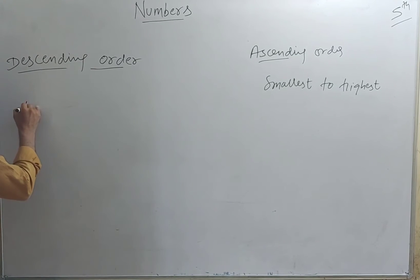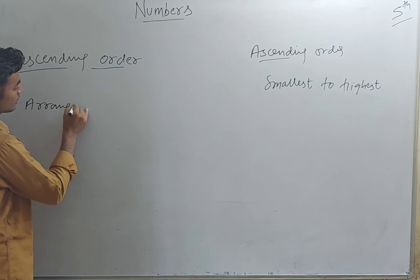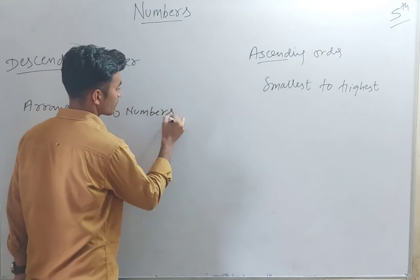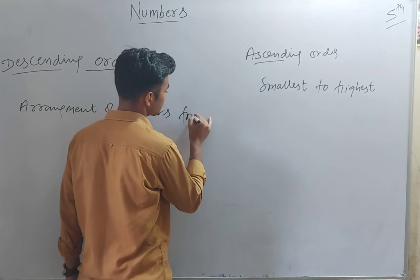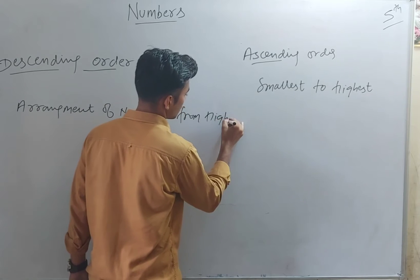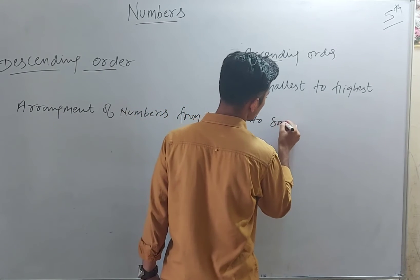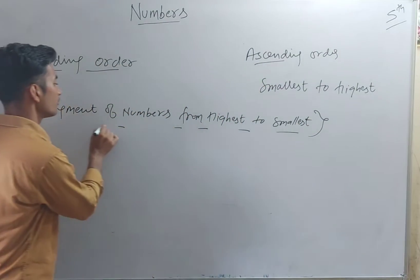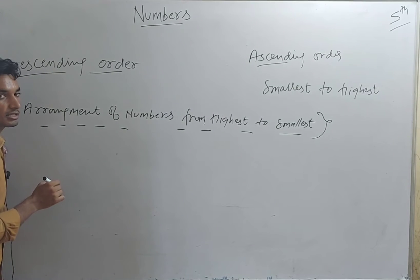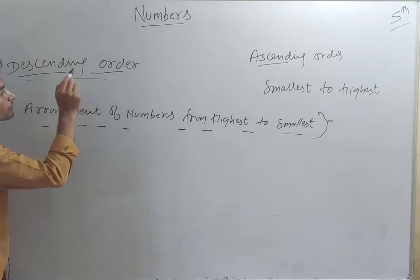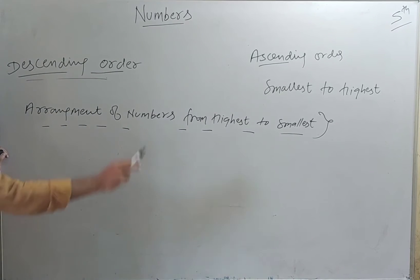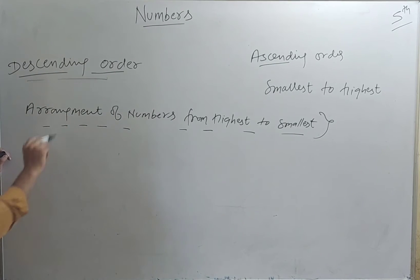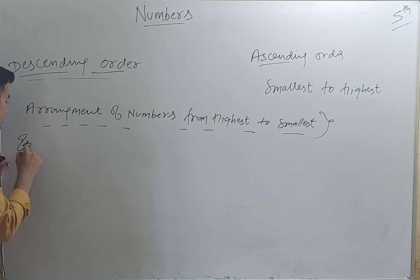What is the descending order? Descending order is the arrangement of numbers from highest to smallest. In Hindi we call it 'avrohi kram'. Ascending order and descending order are both arrangements of numbers — ascending goes smallest to highest, descending goes highest to smallest. Now let's study some examples.